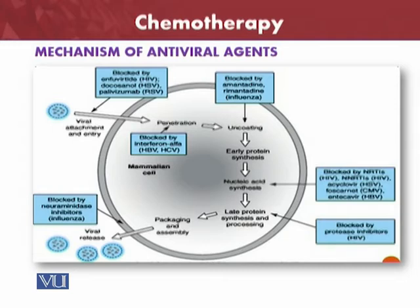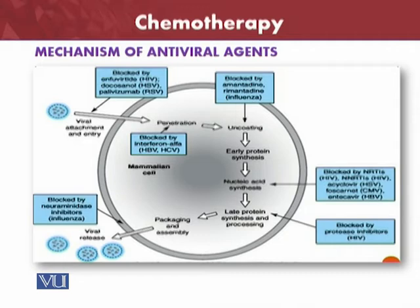At the time of viral entry and attachment, drugs such as enfuvirtide, palivizumab, and related agents are capable of stopping the virus. If the virus has already penetrated, it can be blocked by interferon alpha — for example, in hepatitis B and hepatitis C. At the uncoating stage, it can be blocked by amantadine, for example in influenza. For nucleic acid synthesis, antiviral drugs such as adefovir are used for hepatitis B and HSV. For late protein synthesis, protease inhibitors are used in the case of HIV.